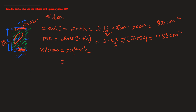Now for the volume, it is given by πr²h. π is again 22/7, r is 7 centimeters squared, and h is 20 centimeters. If you calculate it, you will get 3080 centimeters cubed. In this way we can easily find the curved surface area, total surface area, and volume of a given cylinder.